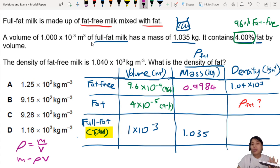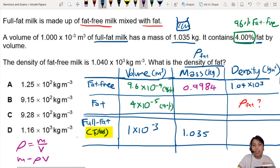So if I know the total is 1.035, it's a total. I can just take total minus the mass of fat-free. And that will give me 1.035 minus 0.9984. So that will be 0.0366, mass of fat.